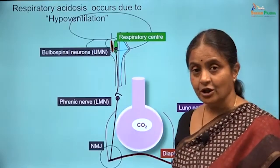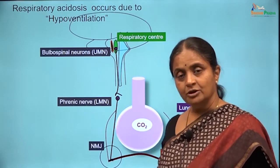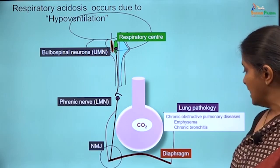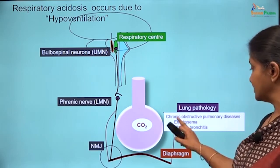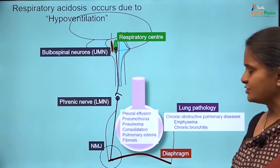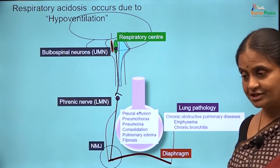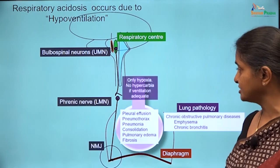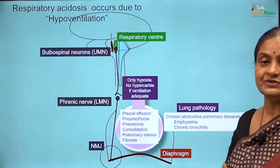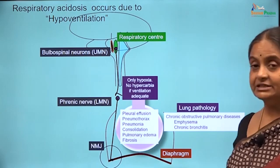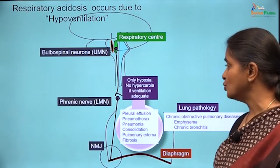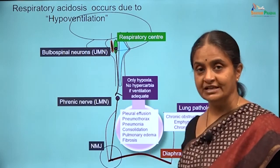We have now considered lung pathologies where respiratory acidosis will occur: emphysema and chronic bronchitis, classified as chronic obstructive pulmonary diseases. For a set of other lung conditions — pleural effusion, consolidation, fibrosis — carbon dioxide generally does not go up unless the disease is so extensive as to limit ventilation. If adequate ventilation can be maintained, there is no hypercarbia and therefore no respiratory acidosis.